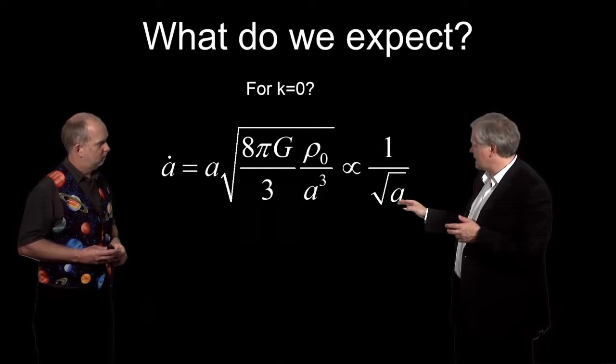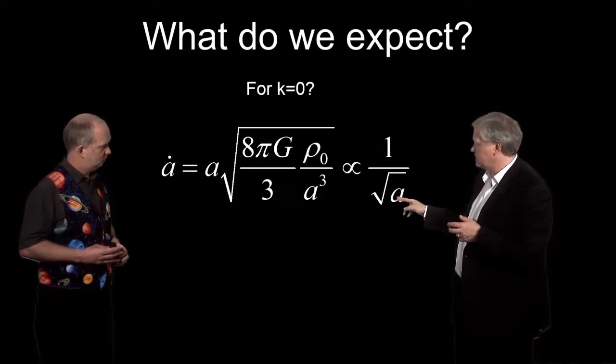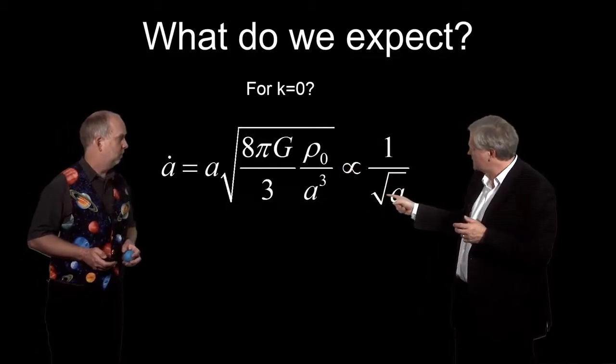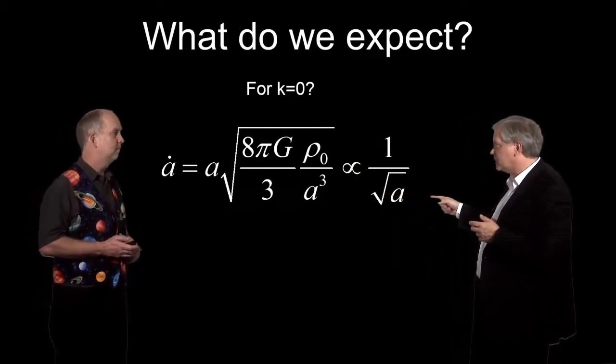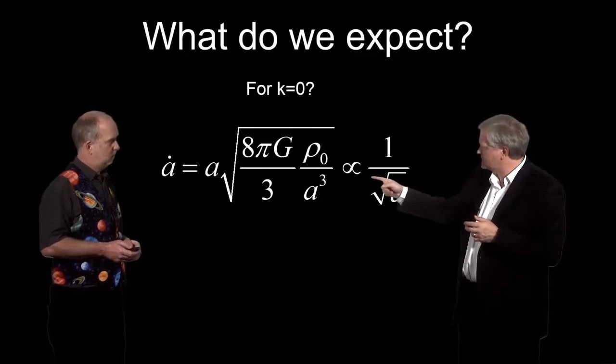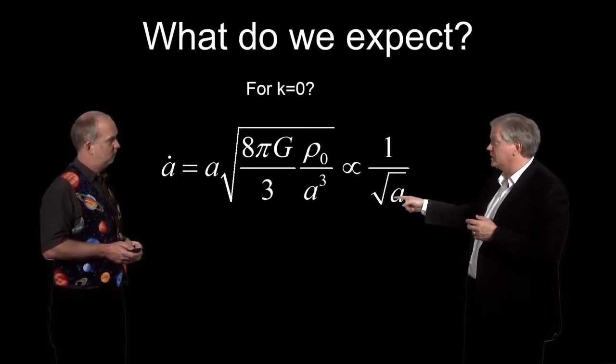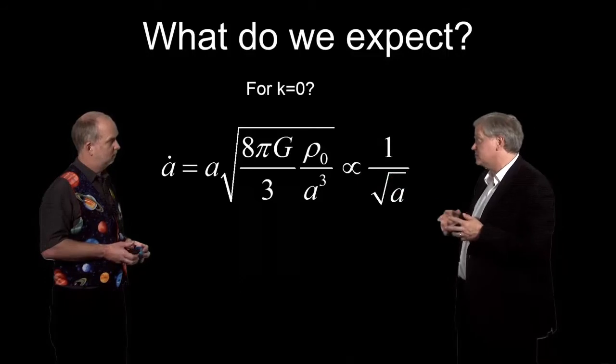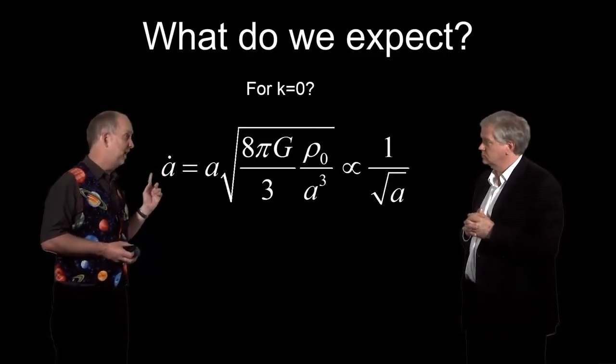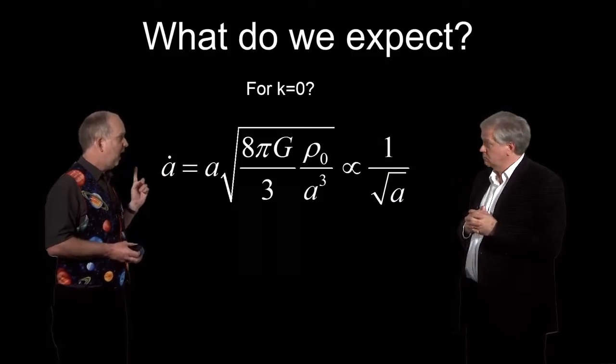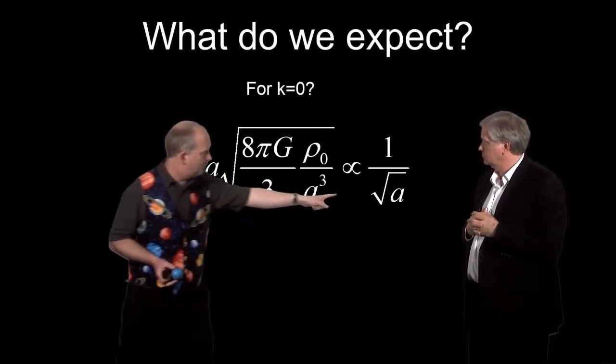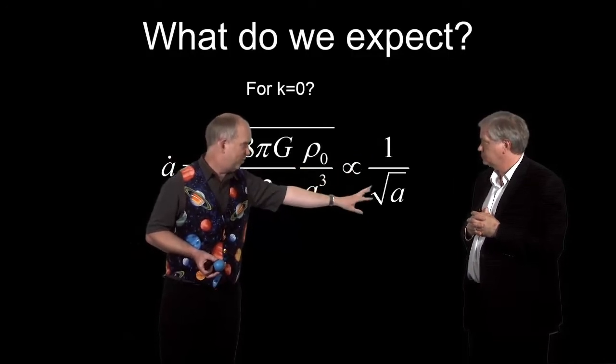So that means that when A is really small, the rate of change in the universe is really big. But then as A gets bigger and bigger and bigger, eventually the universe expansion gets smaller and smaller, because one over a really big number becomes a very small number. So what it's telling us is the universe, we know that A dot is positive right now, the universe is expanding, and it's always going to be positive. The universe will always expand.